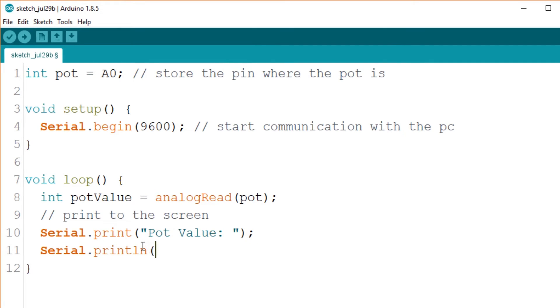In this sketch, I will print a string and then the potentiometer value, which is stored in the pot value variable. Finally, just create a little delay so we don't see too many prints in the screen.